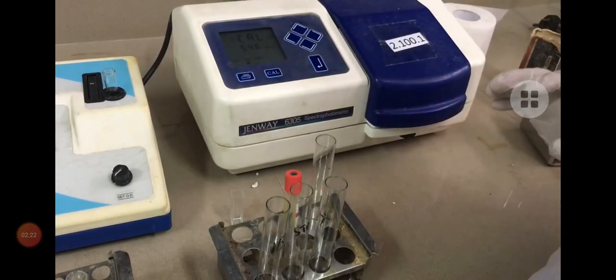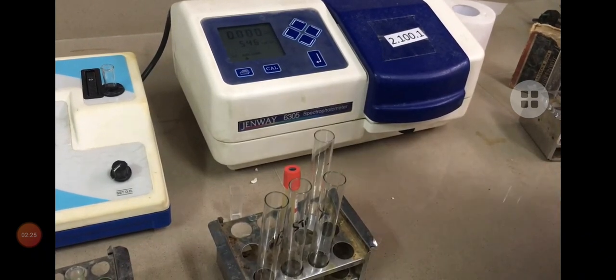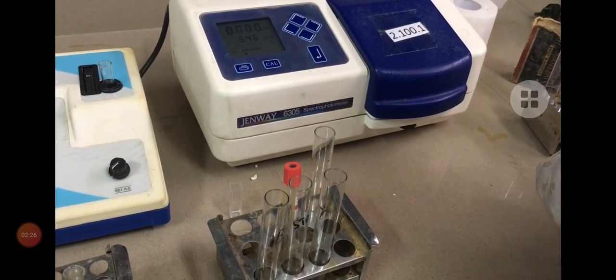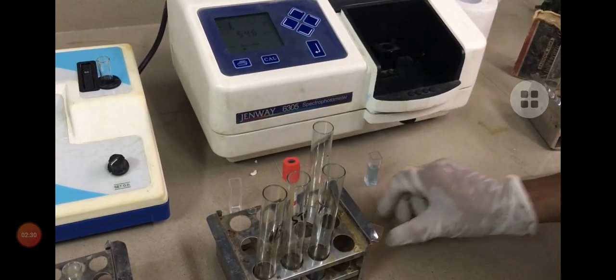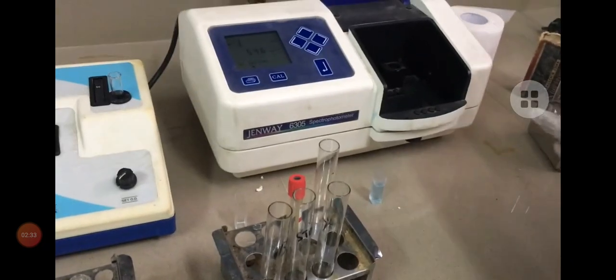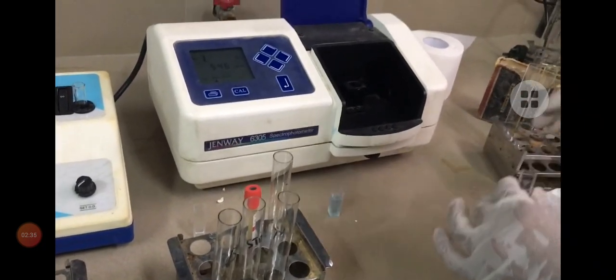Now we are going to calibrate the spectrophotometer. We have put the blank solution in the spectrophotometer and we have calibrated it to zero. This was our blank solution. Now we are going to put the sample in a cuvette.